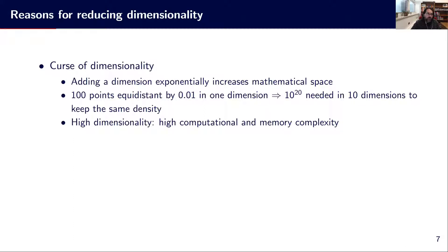The point of doing this is to fight the curse of dimensionality. Adding a dimension exponentially increases the mathematical space we are working in. For example, in 1D, if we have 100 points in the 0-1 interval, these points are equidistant by 0.01. If we want to keep that sampling density in 10 dimensions, we would need 10 to the power 20, which is incredibly huge. This amount of data is impossible to handle.